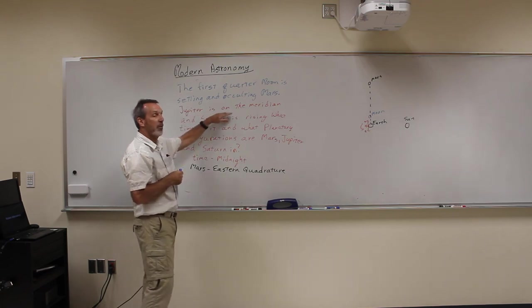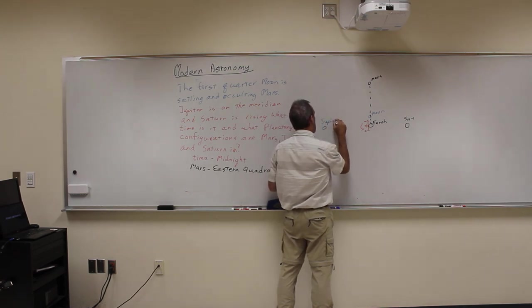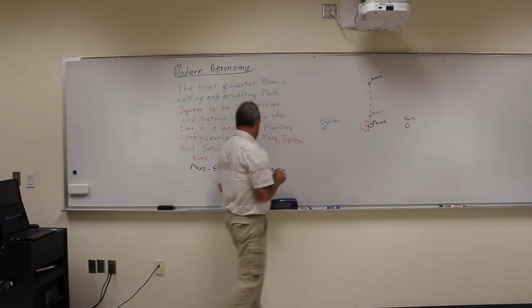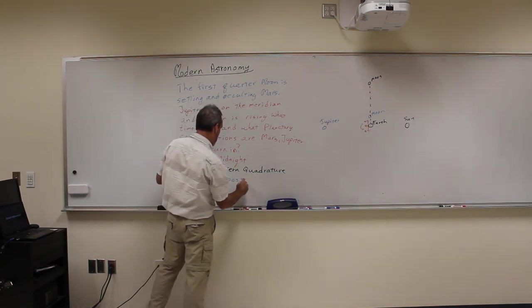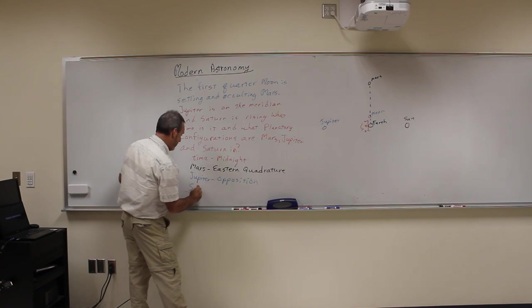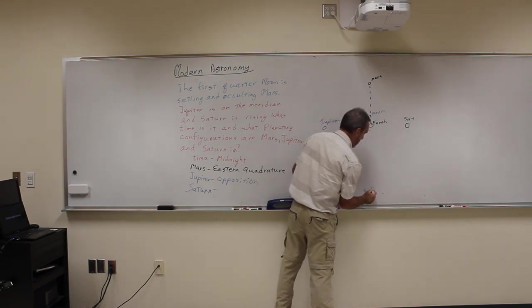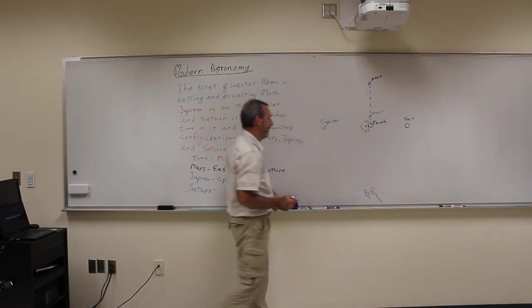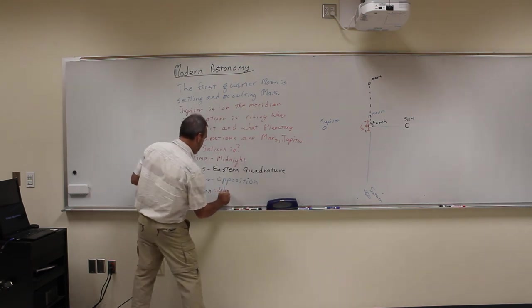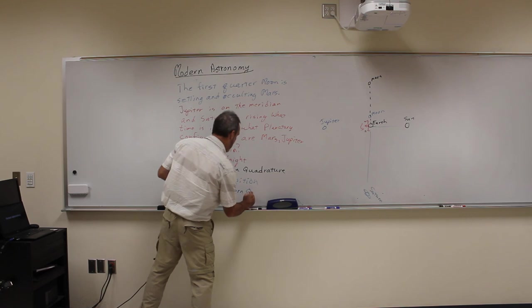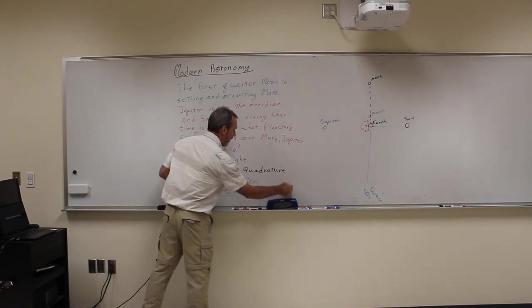And then, we have Jupiter on the meridian. Remember, the meridian's overhead. So here's Herb. So Jupiter overhead, we'll put Jupiter out here. Jupiter out here, remember, it goes Jupiter, Earth, Sun. It's opposite, so Jupiter is in opposition. And then Saturn is rising, so it has to be in the east, so Saturn is down here. If Saturn is down there, then remember this makes a 90 degree angle. It would be in western quadrature. There you go. There are all your answers.